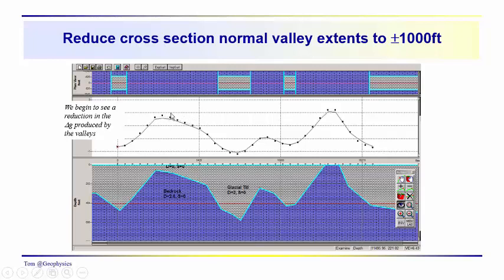And now the delta G becomes a little bit more apparent. We can see the dashed line is where the original calculations were when these valleys were infinitely wide or one kilometer wide. See a little bit of a dashed line there.